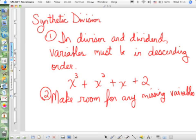First thing is that in both your divisor and your dividend, your variables must be in descending order, meaning the exponents of the variables. Notice in the example, I've got x cubed, x squared, x to the first power, and then I could say x to the zero power because there is no x. Once you make sure they're in descending order, you've got to make sure that all of those are present. And if they're not, you've got to make room. Room.